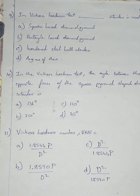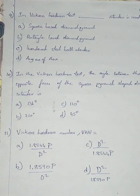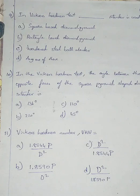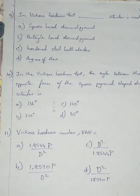Question number 10. In the Vickers hardness test, the angle between the opposite faces of the square pyramid shaped diamond indenter is: Option A 136 degrees, Option B 210 degrees, Option C 110 degrees, Option D 45 degrees. The correct answer is option A, 136 degrees.